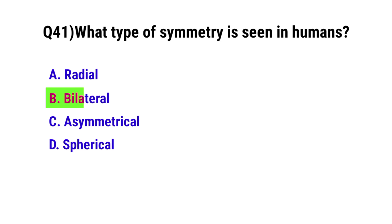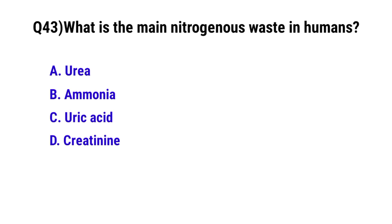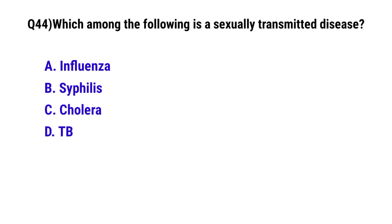Question 41: What type of symmetry is seen in humans? The correct option is B: bilateral. Question 42: What is the term for programmed cell death? The correct option is D: apoptosis. Question 43: What is the main nitrogenous waste in humans? The correct option is A: urea. Question 44: Which among the following is a sexually transmitted disease? The correct option is B: syphilis.